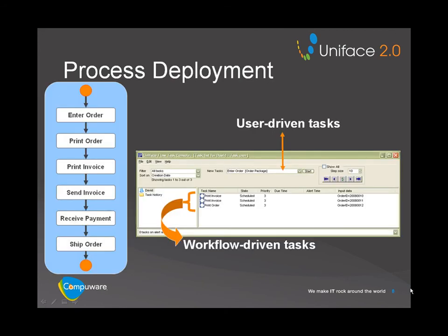For deploying a business process model, UnifaceFlow provides a number of applications. The Task Console is an individual electronic to-do list for each user or actor who executes tasks in the process. The Task Console is used only to execute tasks that require the intervention of an actor. Batch tasks are executed in the background. In the Task Console, actors can start workflow-driven tasks assigned to them by the Workflow Engine, and can also execute user-driven tasks by selecting them from a drop-down list. Most user-driven tasks initiate the process.